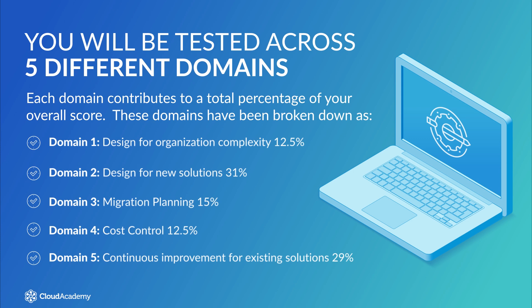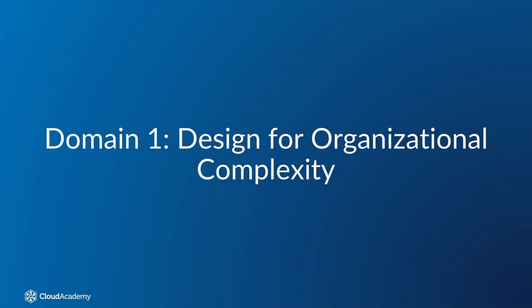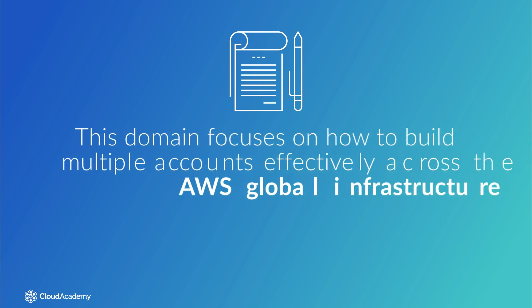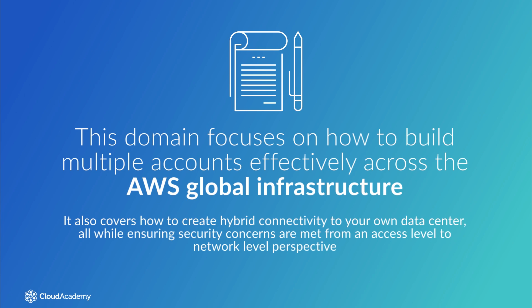Each of these domains can be broken down into defined areas of knowledge. Domain 1, design for organizational complexity, is focused on how to build multiple accounts effectively across the AWS global infrastructure and how to create hybrid connectivity to your own data center, all while ensuring security concerns are met from an access level to network level perspective.